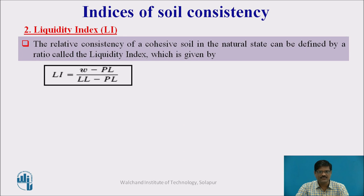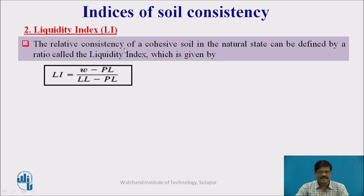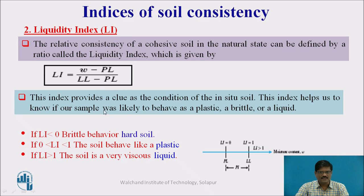Another index is the liquidity index, denoted by LI. The relative consistency of a cohesive soil in its natural state can be defined by a ratio called the liquidity index, which is given by: natural water content minus plastic limit, divided by liquid limit minus plastic limit. The liquidity index gives us an idea about the natural state of consistency of the soil.